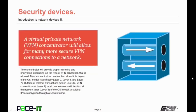Let's move on to the virtual private network concentrator, the VPN concentrator. This will allow for many secure VPN connections to a network. The concentrator will provide proper tunneling and encryption depending upon the type of VPN connection allowed. Most concentrators can function at multiple layers of the OSI model — specifically at layer 2, layer 3, and layer 7. Outside of internet transactions using an SSL VPN connection at layer 7, most concentrators will function at layer 3 of the OSI model, providing IPsec encryption through a secure tunnel.